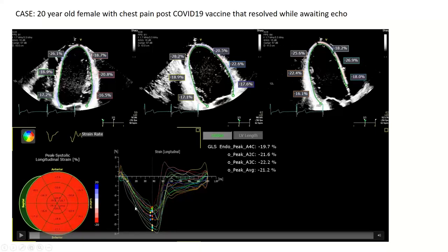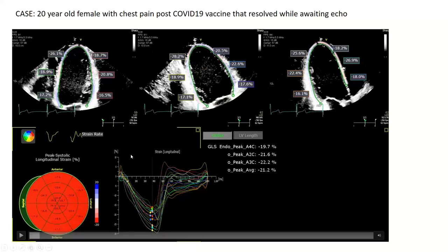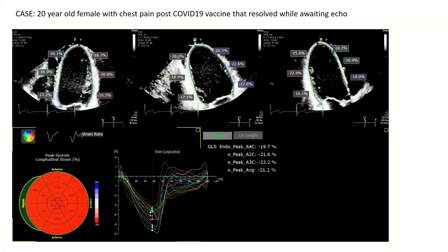The strain analysis window also shows the strain curve: on the y-axis is strain percent, and on the x-axis is time. The dotted blue line marks where aortic valve closure occurs — the system sets that automatically but allows quality control to ensure it's in the correct place. In broad strokes, we expect shortening to occur in systole and lengthening of the fibers in diastole. But there's a lot more to the strain curves, so in the next few slides we'll focus on understanding what we can see.